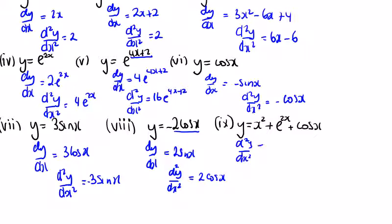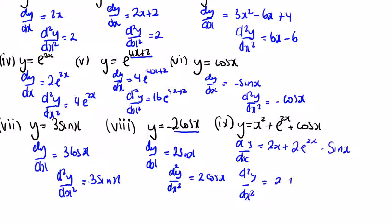And for question 9, d squared y dx squared is going to be 2 plus 4e to the power of 2x, and then for the sin term: dy dx, d squared y dx squared is equal to 2 plus 2e to the power of 2x times 2 which is 4e to the power of 2x, and sin goes to cos, so minus sin goes to minus cos.